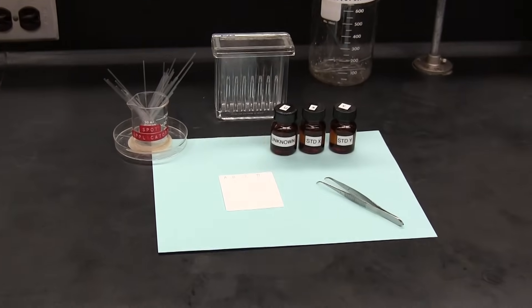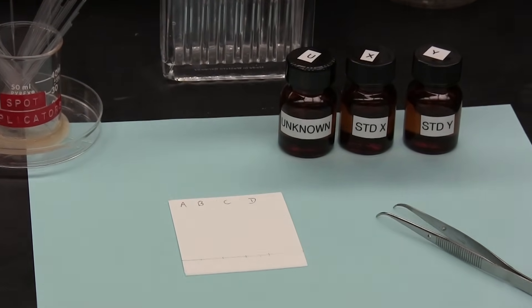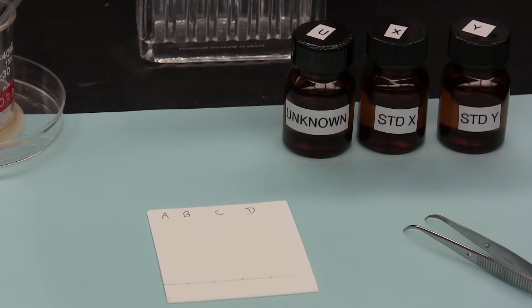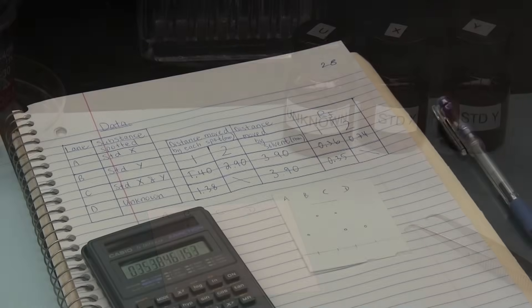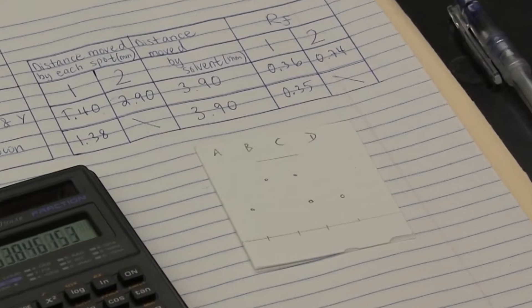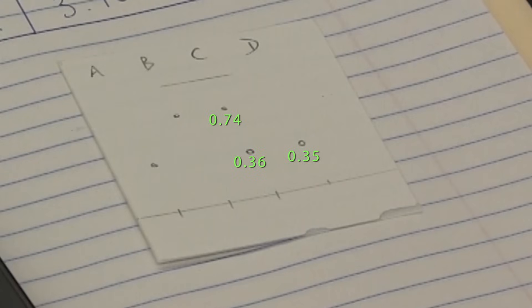Nevertheless, in most cases, it's possible to confirm the presence or absence of a compound by comparing its RF value to that of a reference or standard run alongside it on the same TLC plate. Here we can see that the RF of the spot in lane D is much closer to the RF of compound X than the RF of compound Y, and since we knew that the unknown was one or the other, we can confirm the unknown's identity as being compound X.